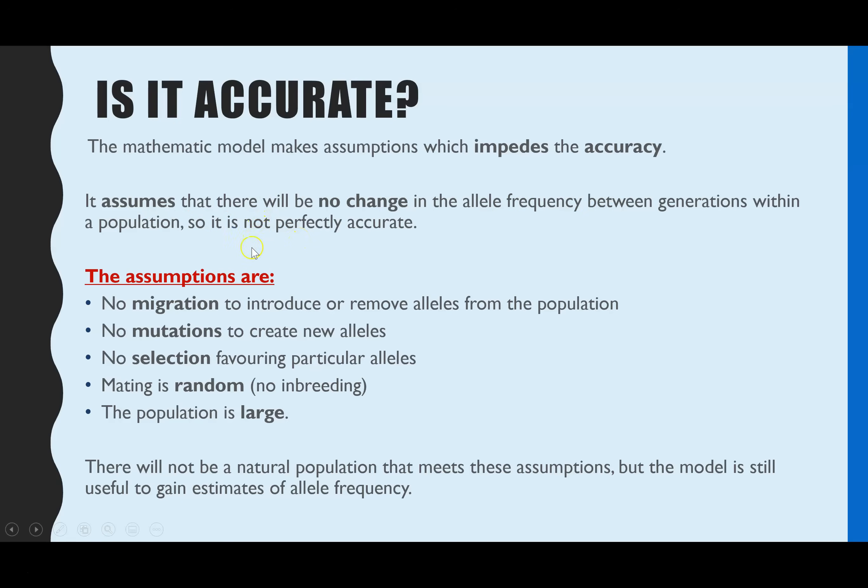The assumptions are: there must be no migration, so you can't have any individuals migrate in terms of emigration or immigration to remove or add new alleles. There would be no mutations creating new alleles in the gene pool. There's no selection, meaning that none of the alleles for that particular gene have any advantage to survival over the others, so they're all equally advantageous. Mating is random, so individuals are not reproducing with anyone within their family, and it's a large population.